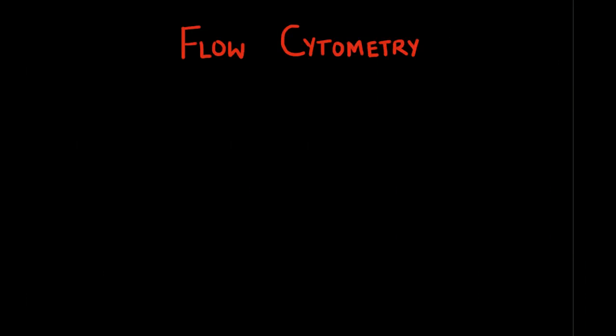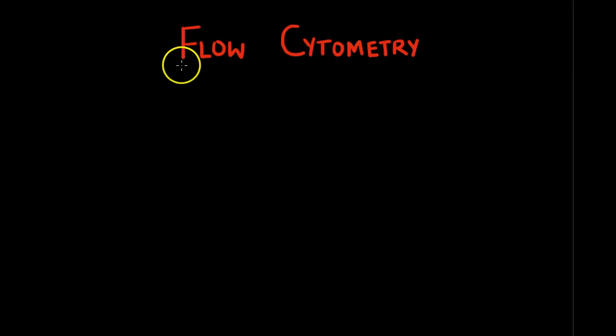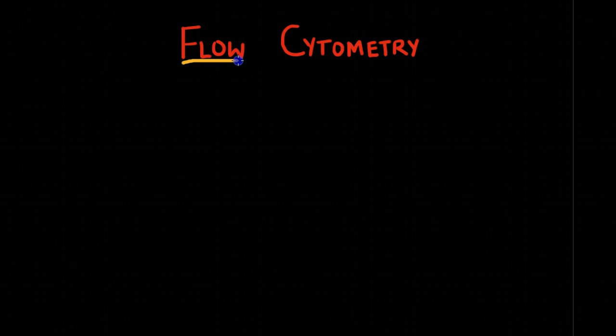Let's break flow cytometry down to better understand what it means. Flow is fluid or flowing, cyto being cells, and metri being measurement.